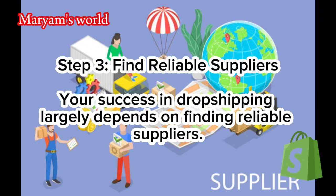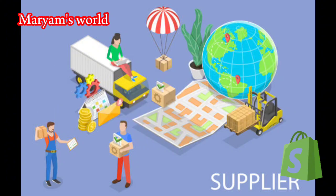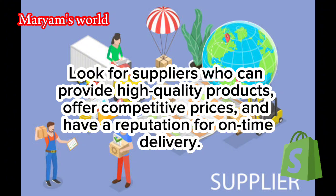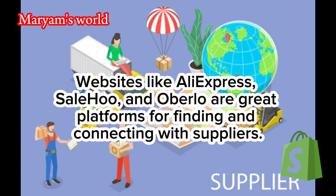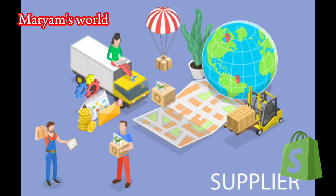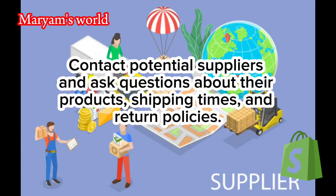Step 3: Find reliable suppliers. Your success in dropshipping largely depends on finding reliable suppliers. Look for suppliers who can provide high-quality products, offer competitive prices, and have a reputation for on-time delivery. Websites like AliExpress, SaleHoo, and Oberlo are great platforms for finding and connecting with suppliers. Contact potential suppliers and ask questions about their products, shipping times, and return policies.